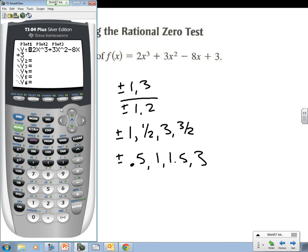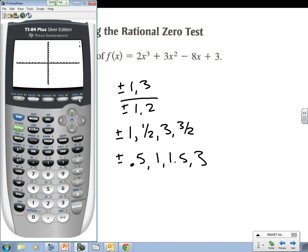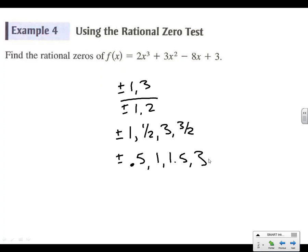We know it's going to be between those values, so negative 10 to 10 is fine. Looking at the graph, using trace, it looks like negative 3 is pretty close, and that's on our list. So we'll do some synthetic division — negative 3 outside, coefficients 2, 3, negative 8, and 3 — and it comes in clean.